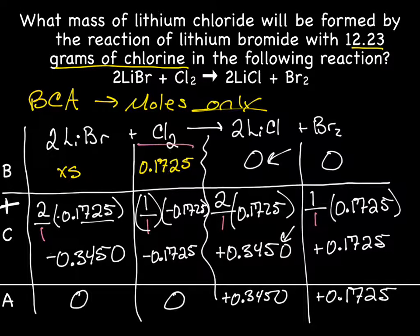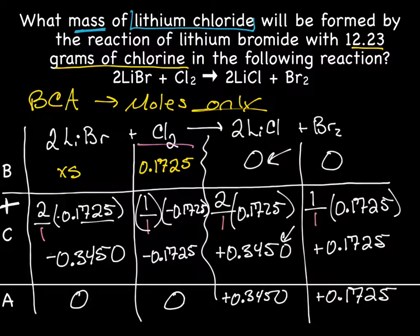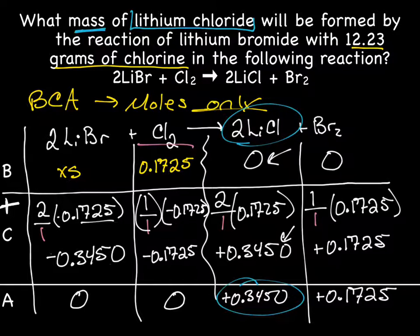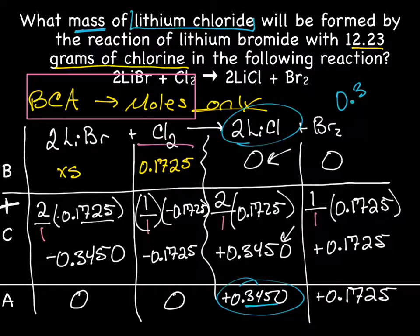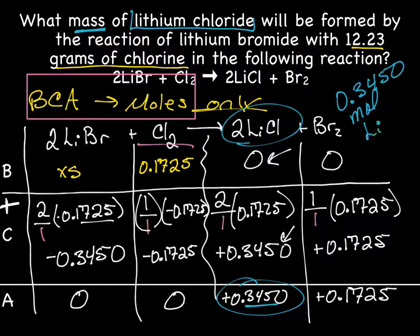Let's go back to our question and see what we were looking for. We were looking for mass of lithium chloride. So we're looking for this column here, lithium chloride, but we're looking for mass. And remember, one more time, BCA is only moles. So we know the moles now of lithium chloride, but we need to calculate mass. So we're going to take this right here, which I'll write up at the top here is 0.3450 mole of lithium chloride, and we'll convert that to mass.